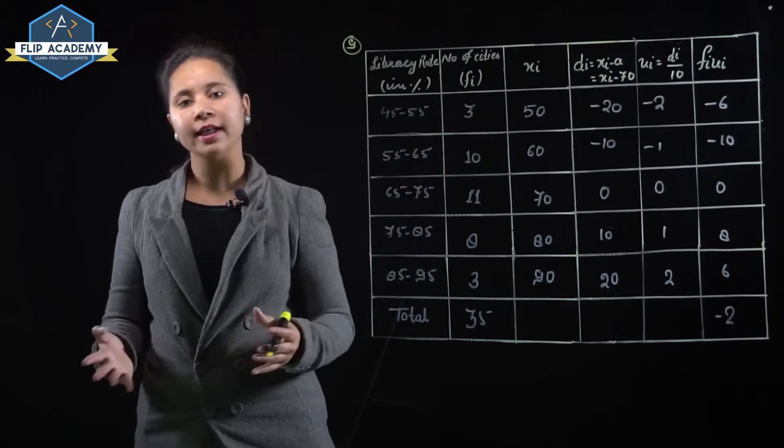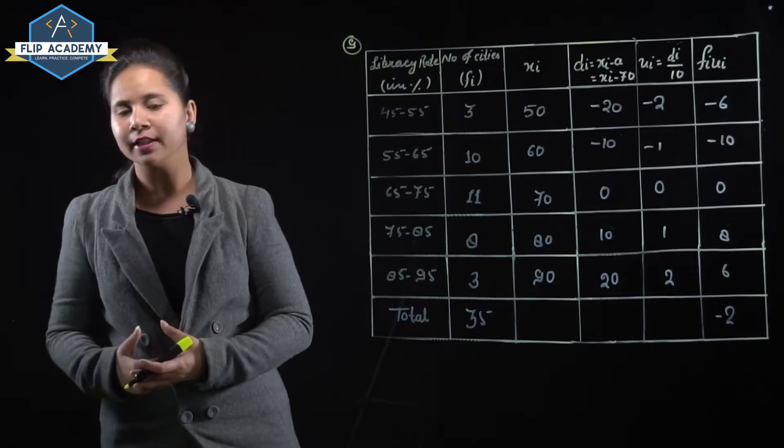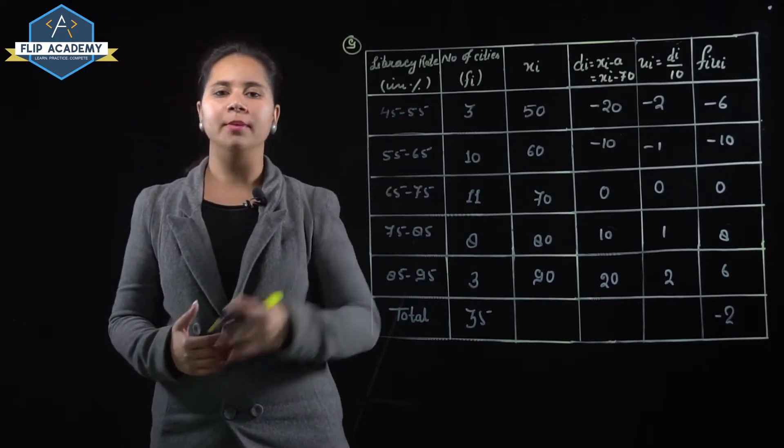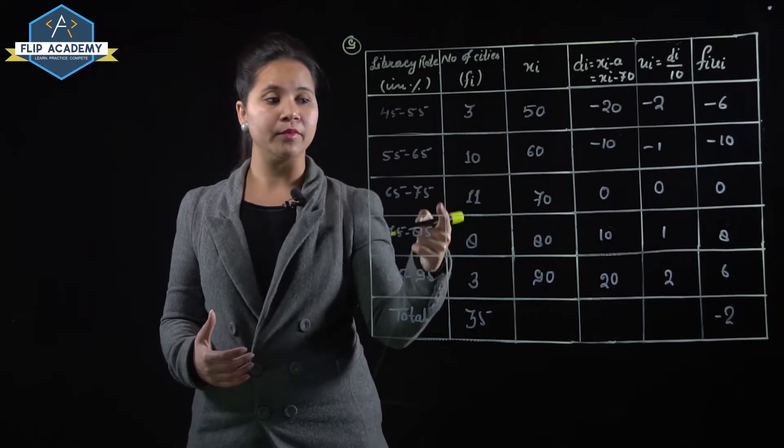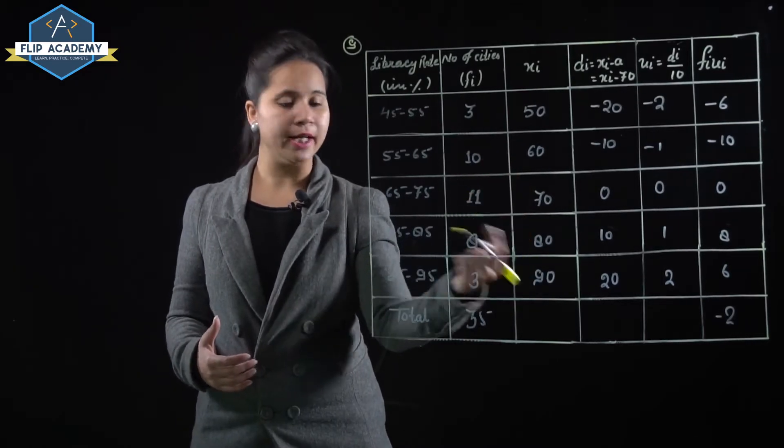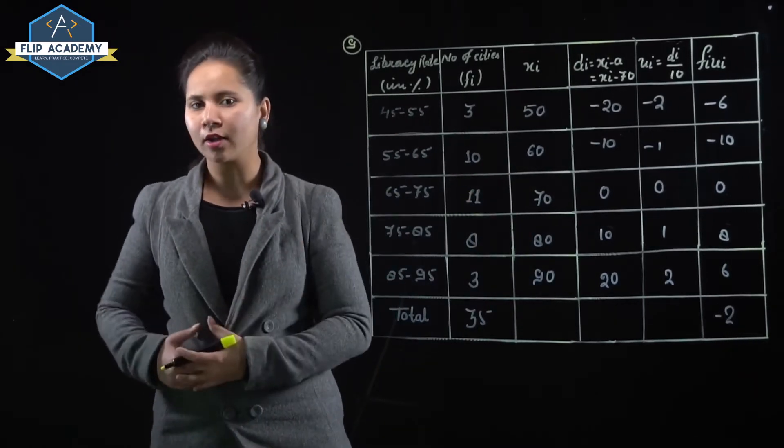Overall there are 35 cities. Now xi is the class mark. Class mark is calculated as upper limit plus lower limit divided by 2. So 45 plus 55 divided by 2 equals 50, same as 60, 70, 80, and 90. We have obtained the class marks.